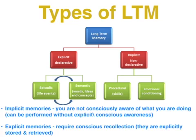Explicit memories, on the other hand, as the name implies, are explicitly stored and retrieved, and thus they require conscious recollection when we're trying to recall, for instance, mum's birthday, who the Prime Minister of Australia is, the formula for area of a circle, etc.